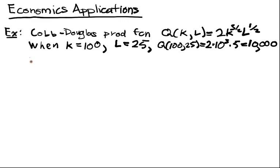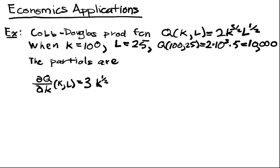The partial derivatives of this function are ∂Q/∂K of K,L. Here we let L remain constant and take the derivative with respect to K. We subtract 1 from the exponent and bring out a 3 halves, so we get 3 times K to the 1 half, L to the 1 half. Similarly, ∂Q/∂L of K,L equals K to the 3 halves, L to the negative 1 half.